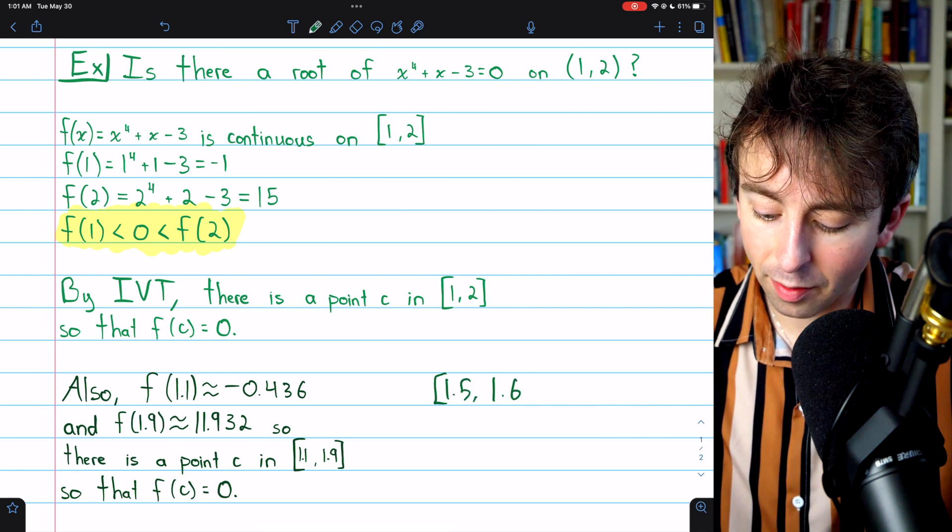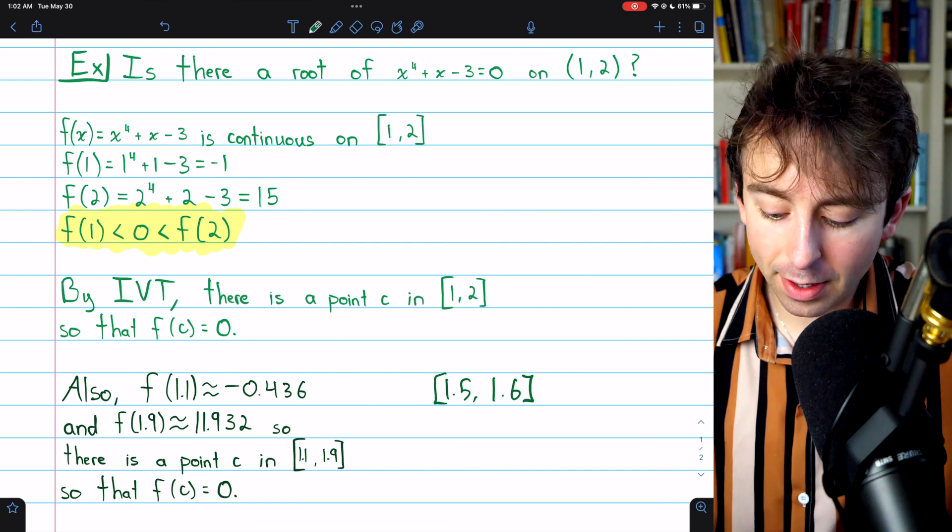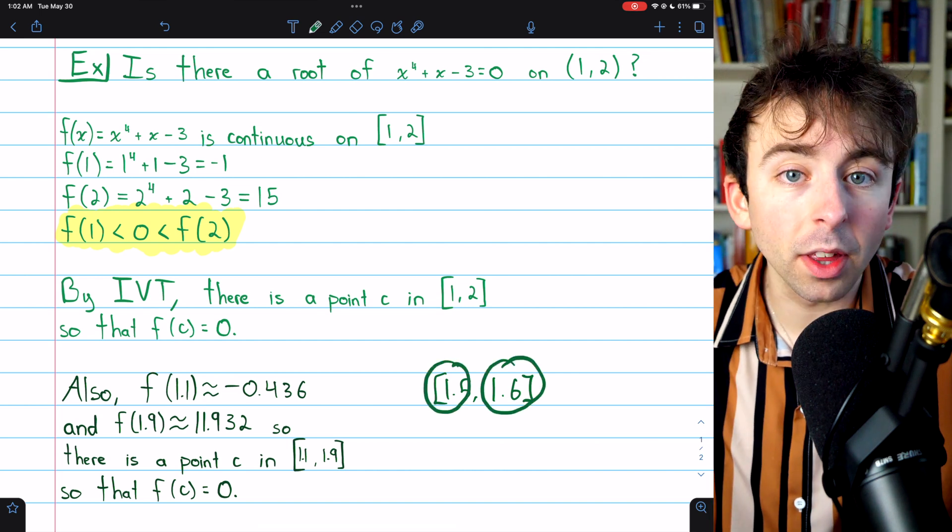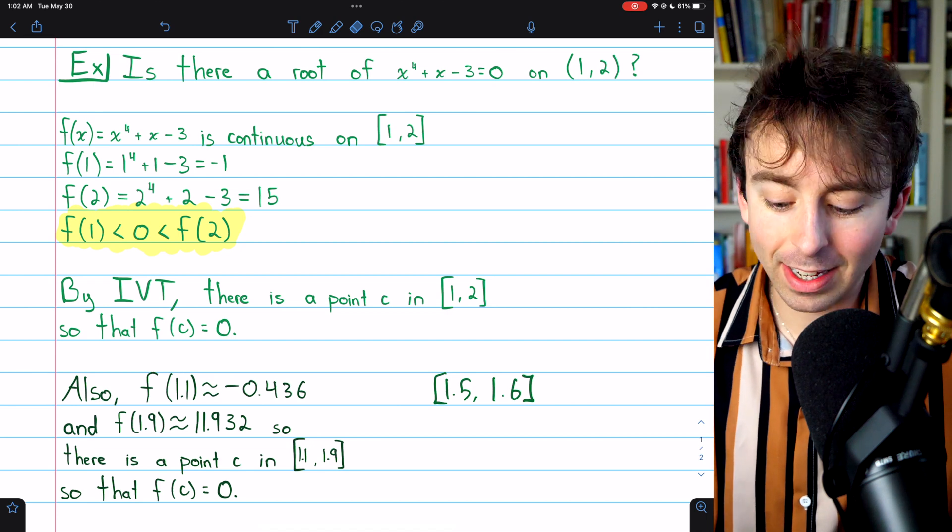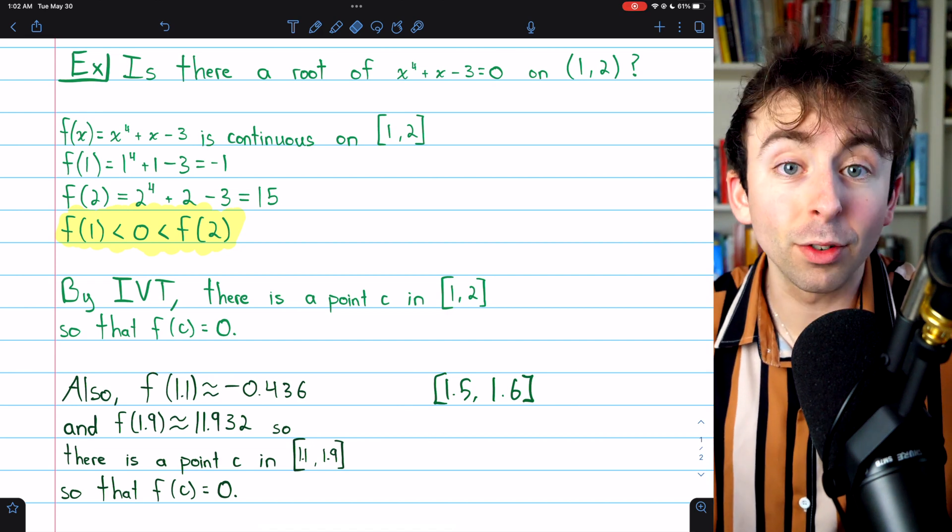If we were to shrink our interval more and say we try looking at the closed interval [1.5, 1.6], f is actually positive at both of these endpoints. So the intermediate value theorem would not guarantee us any roots on this closed interval.